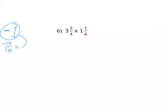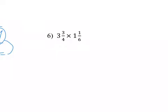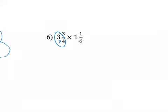Okay. 3 and 3/4. 1 and 1/6. So I need to do what first? Change both of them. Change both of them how? You do 3 times 4. Add 3. Okay, so 3 times 4 is 12. Plus 3 is 15. 15 over 4.